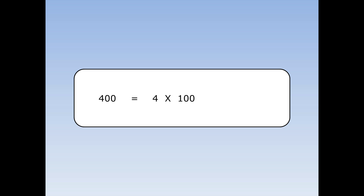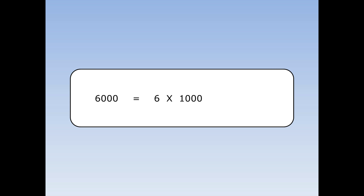What's four hundred in standard form? Well, four hundred equals four times a hundred, which is equal to four times ten squared. Four is between one and ten, times ten to the something — so four times ten squared is standard form. What's six thousand in standard form? Six thousand is six times a thousand, which is equal to six times ten cubed. Six is between one and ten, times ten to the something — this is standard form.